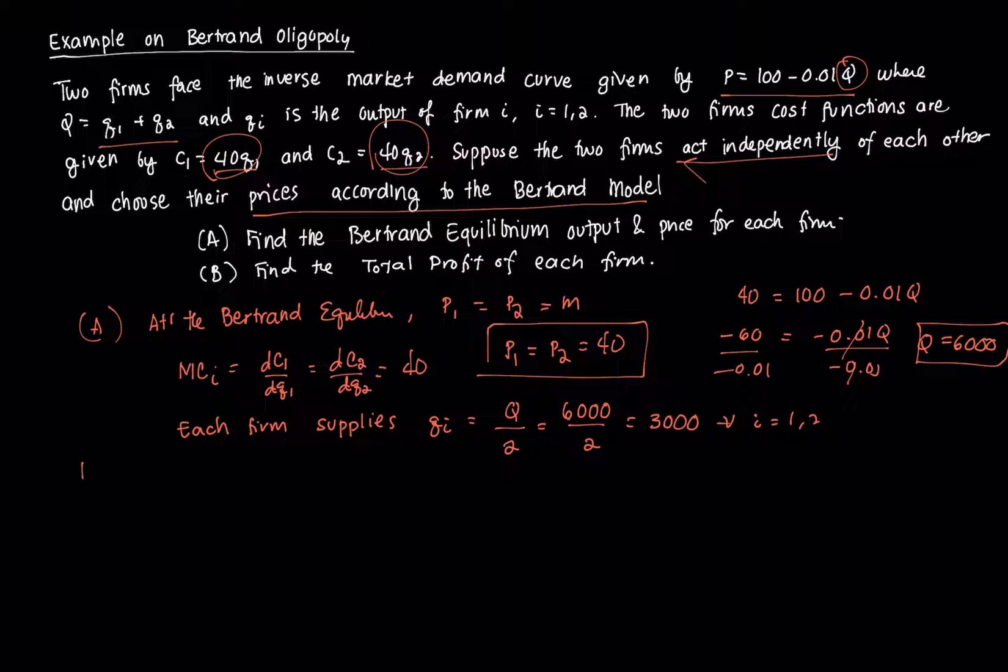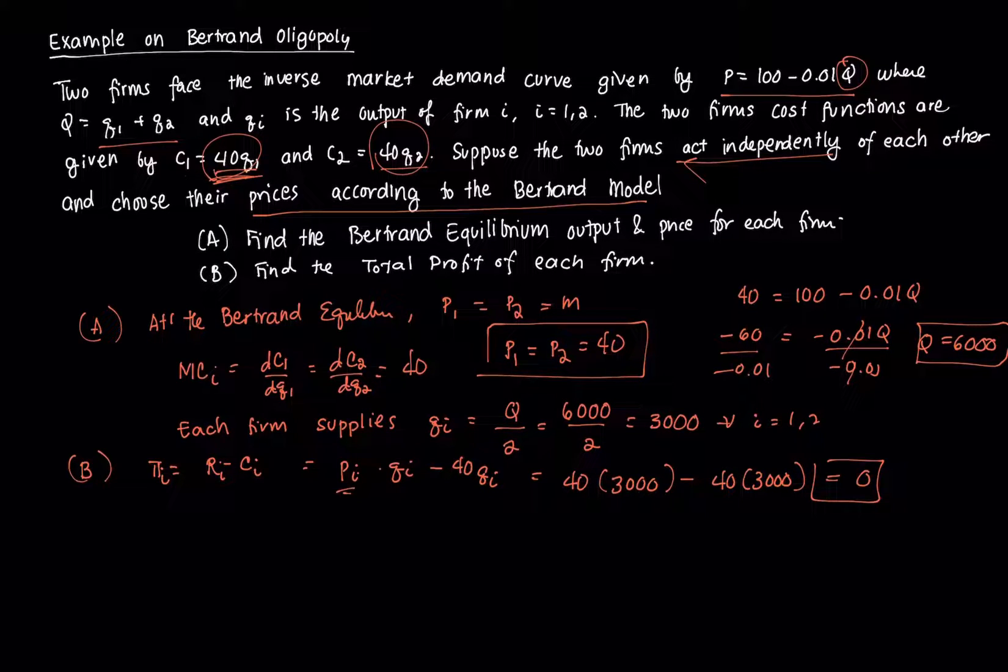Then for B, we can find the profit by just plugging all that we have. Profit is equal to revenue minus cost. Profit of a specific firm equals revenue of a specific firm minus cost of a specific firm. This is equal to P times Qi minus 40Qi. We know that P, whether firm 1 or firm 2, that's 40 times Qi, that's 3,000, minus 40 times 3,000, which we get to an economic profit of 0, which makes sense for our case.